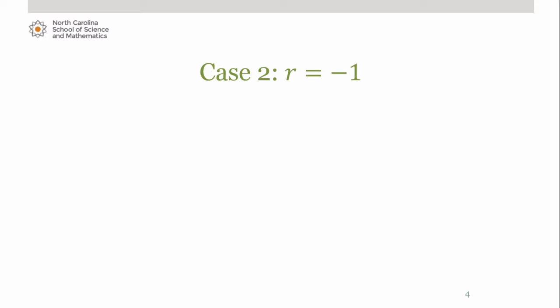Now suppose that r equals negative 1. This gives us the geometric series as you see here. The partial sums of this series alternate between being 0 and a, but never reach a single finite value. Therefore, this series would diverge.